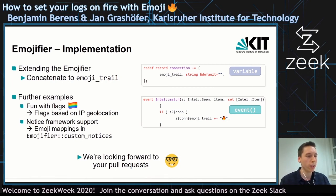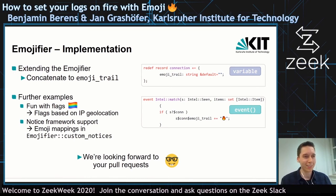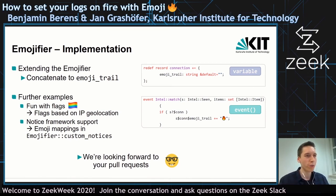We have also built in support for the notice framework. So if you want to map some emojis to certain notifications, you can just extend the custom notices table. We are looking forward to your pull requests — if you can come up with more ideas on how to color your connection log file or maybe other log files, just file a pull request.